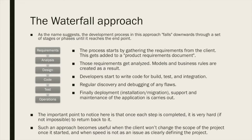In the waterfall approach, as you can see from this diagram, and as the name suggests, the development process falls downwards through a set of stages or phases until it reaches the endpoint. It starts by acquiring the requirements of the project from the client. Then those requirements get analyzed, models and business rules are created as a result, after which you start designing and coding the models, testing and integrating. Then finally the product is delivered to the operations, where it gets deployed, installed or migrated — support and maintenance are also part of this operation.